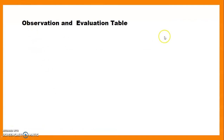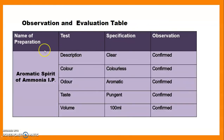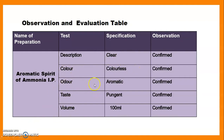The evaluation table contains: name of the preparation, test, specification, and observation. Name of preparation: Aromatic Spirit of Ammonia IP. Test 1 — Description: color is colorless, odor is aromatic, taste is pungent, and volume is 100 ml. All tests are confirmed by our preparation, and the evaluation table is maintained accordingly.